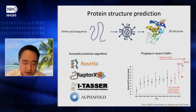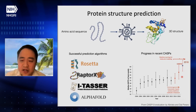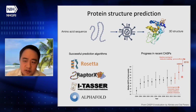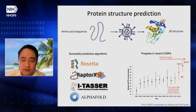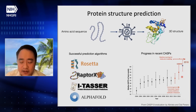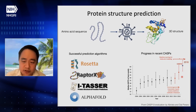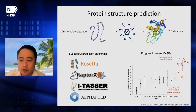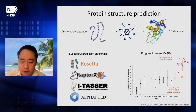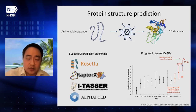So why is that? I'll show you two reasons I believe to be true. One is that machine learning algorithms became very powerful and can leverage a lot of data to make reasonable predictions. The other is a paradigm shift in how we do structure prediction. Previously, the most reliable approach was template-based, but now we are in the regime where we use co-evolution analysis, which relies on contact prediction.